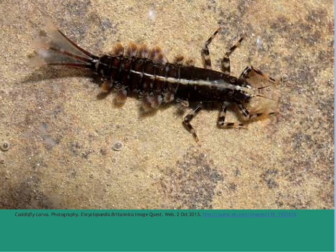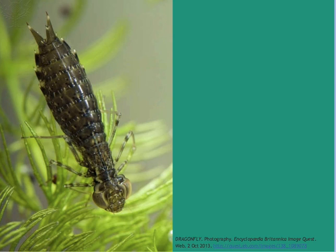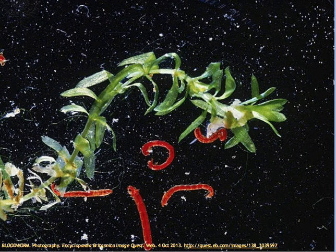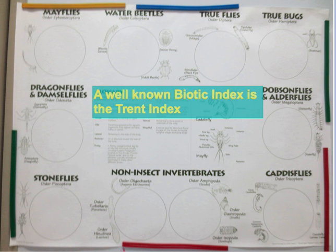The presence of dragonfly larvae suggests that dissolved oxygen levels may be at a medium level — not very high but also not very low. A high abundance of bloodworms or midge larvae indicates water that has a very high level of pollution, usually from sewage outfalls. The Trent Index is therefore a quick way of using the presence of certain easy-to-observe macro invertebrates to make inferences about dissolved oxygen levels.